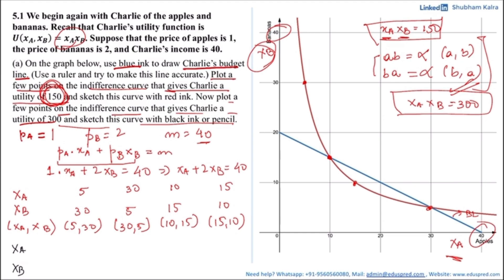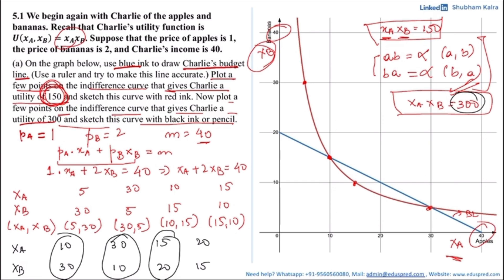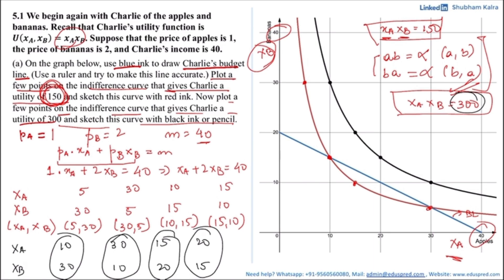We need combinations whose product is 300. Keeping the numbers simple: 10 and 30 give one combination, and by commutativity, 30 and 10 is another. Then 15 and 20, and 20 and 15. The four points are (10, 30), (30, 10), (15, 20), and (20, 15). Plotting these points and joining them gives the indifference curve that gives Charlie the utility of 300.